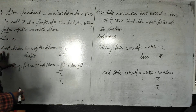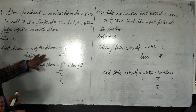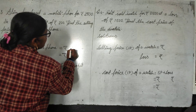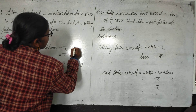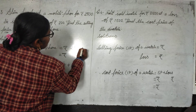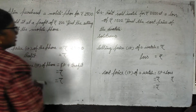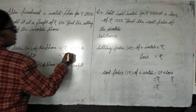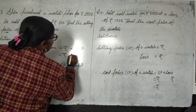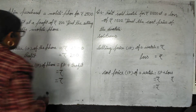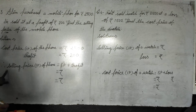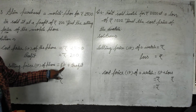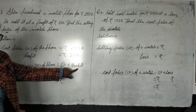So first, cost price of mobile phone: cost price of phone is 2500. And profit is 200. So selling price of phone equals cost price plus profit.